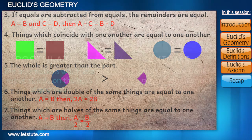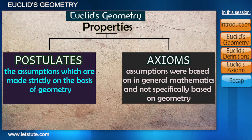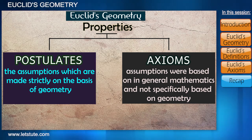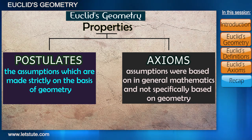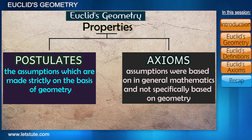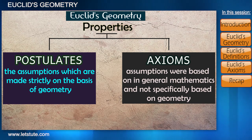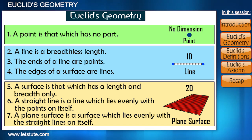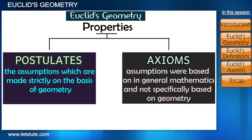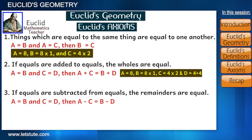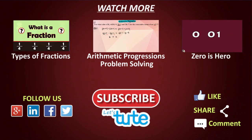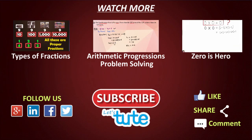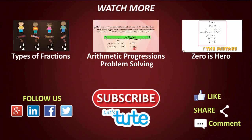Here we are done with Euclid's axioms. We understand it may be too much to cover postulates as well in one session, so let's do a small recap: we covered Euclid's definitions and axioms that took geometry to the next level. If you have any queries or doubts, do write to us — we would love to help you out. If you liked this session, hit the like button and subscribe. Till then, keep watching, keep learning. Thank you.